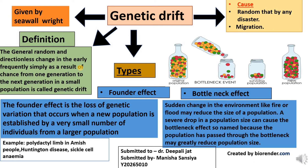So genetic drift is an evolutionary change in the allele frequency of a population as a matter of chance. Now let us talk about the causes of genetic drift. Random death by any disaster may cause genetic drift, and migration may also cause genetic drift. Genetic drift usually occurs in a small population.